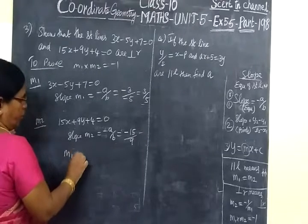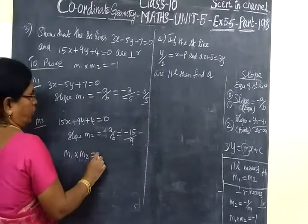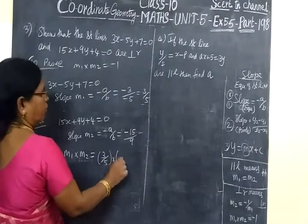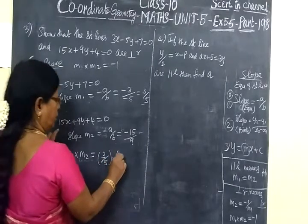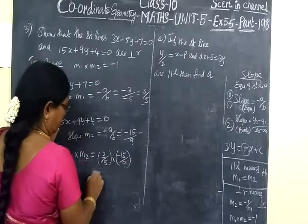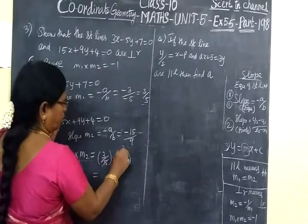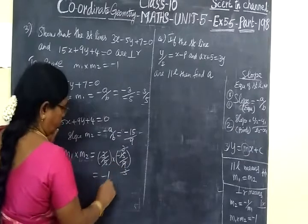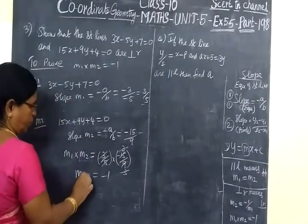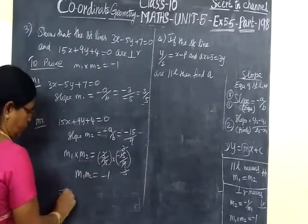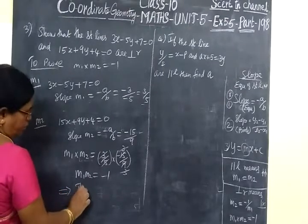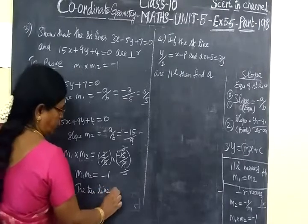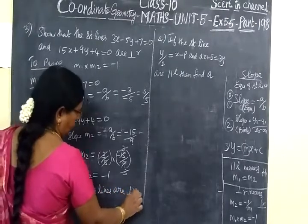Now multiply M1 into M2. M1 into M2 equals 3 by 5 times minus 15 by 9. 3 times 5 cancel, so we get minus 1. So M1 M2 equal to minus 1. This implies the two lines are perpendicular. So this one is over.